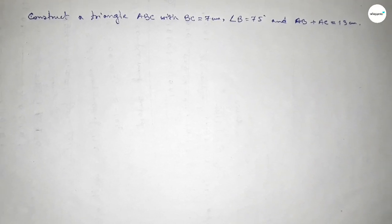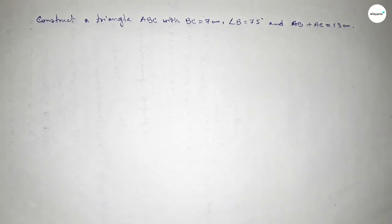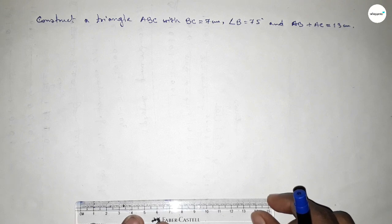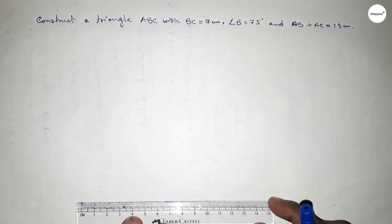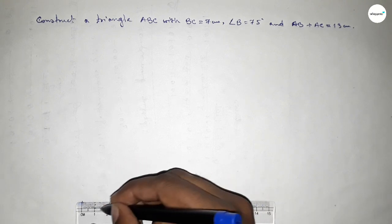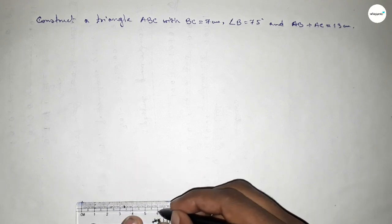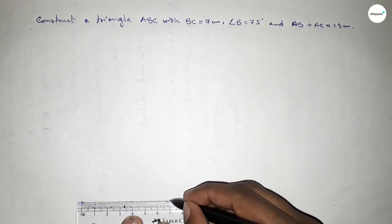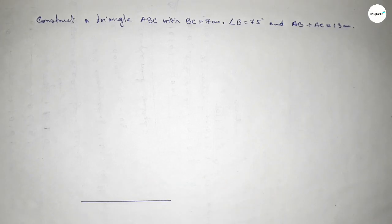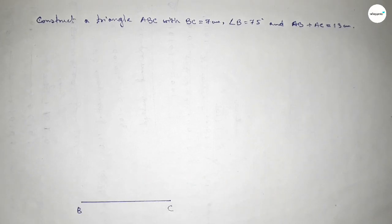First of all, we have to draw a line of length 7 centimeters. Starting from 0: 1, 2, 3, 4, 5, 6, 7 — taking point B at one end and point C at the other.